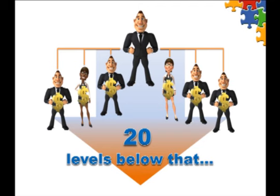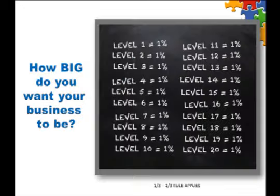So when all these affiliates begin enrolling merchants, you can have a very large number of merchants on your team. And once you've built an affiliate team and they've enrolled merchants, a 1% override will be paid 20 levels deep on voucher sales made by your team.